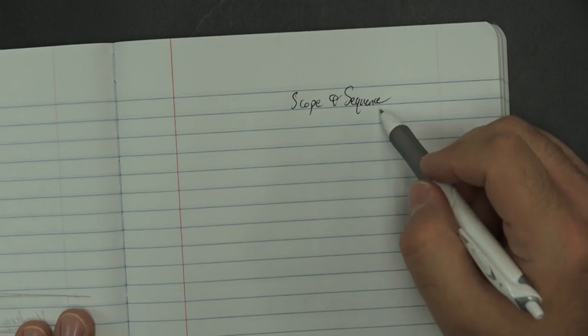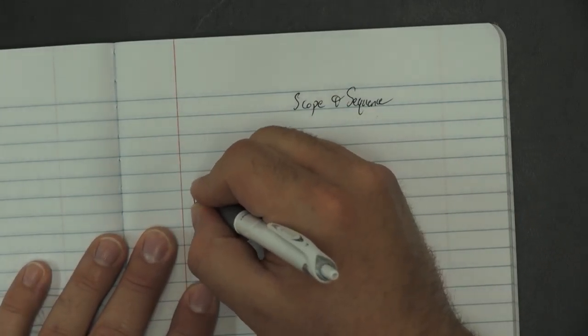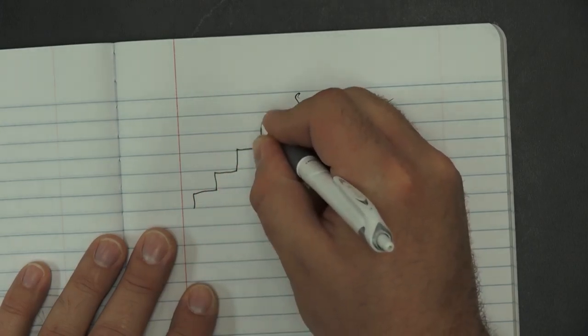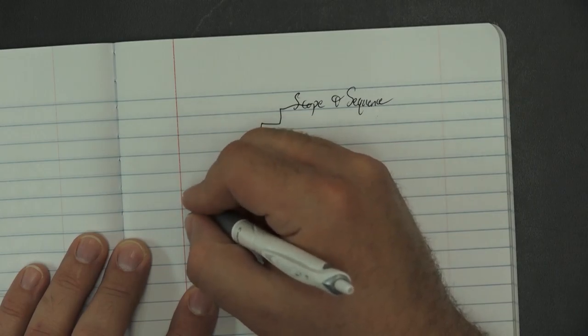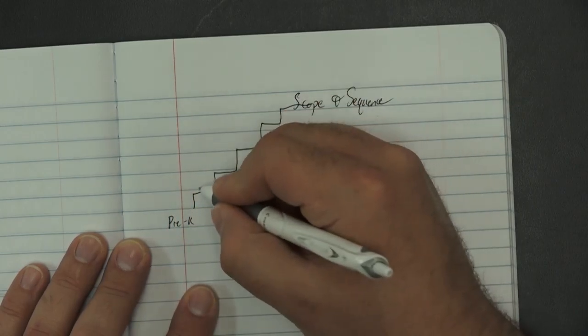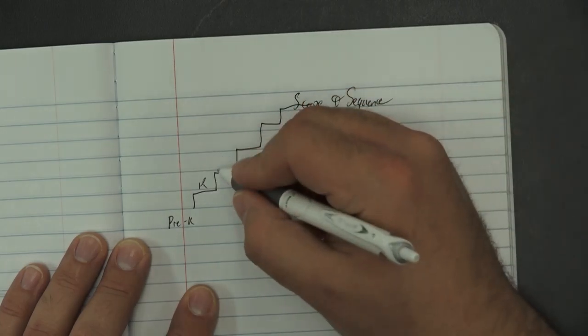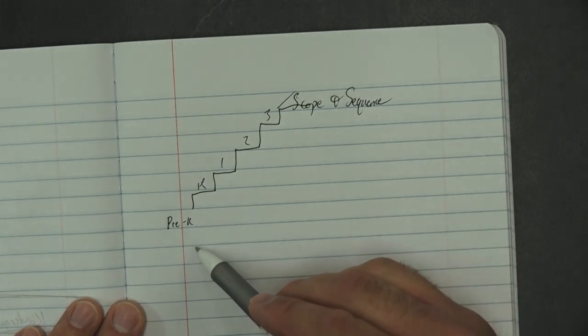Now all of this is really just a scaffolding for scope and sequence. Scope and sequence: what are we learning in one grade that we're going to transfer to another grade to continue us up the path?